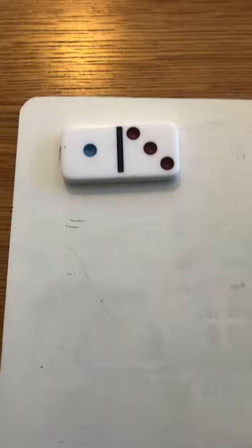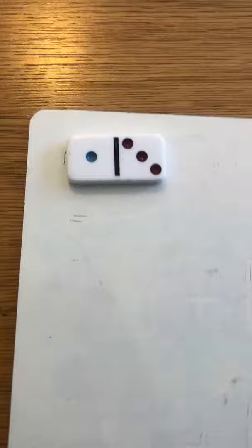So I'm going to begin by putting a domino onto my whiteboard and I'm going to treat the domino like it is two sets. So this is the first one and this is the second one and I'm going to write out my number sentence.